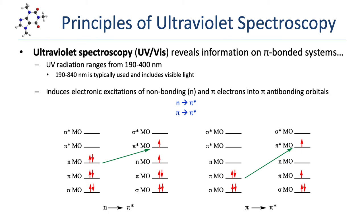When a molecule absorbs a photon of ultraviolet light, it can excite an electron into a higher energy orbital. With organic molecules, there are two types of transformations that can occur: n-to-pi-star and pi-to-pi-star. An n-to-pi-star transformation is the excitation of a non-bonding electron into a pi-star orbital, a pi-antibonding orbital. A pi-to-pi-star transition is the excitation of a pi-bonding electron into a pi-antibonding orbital.